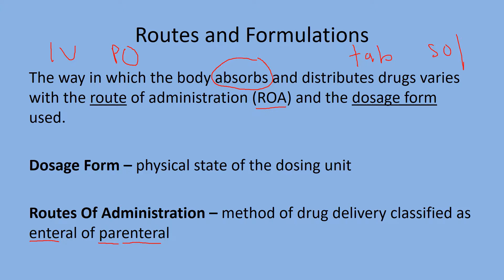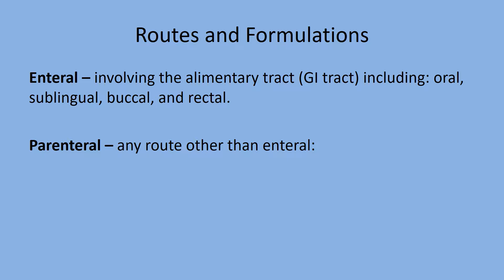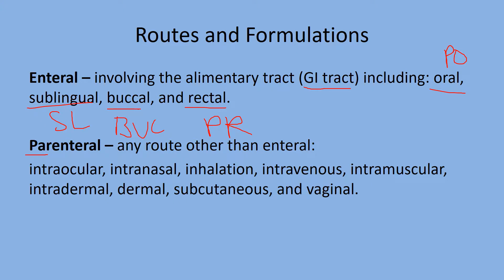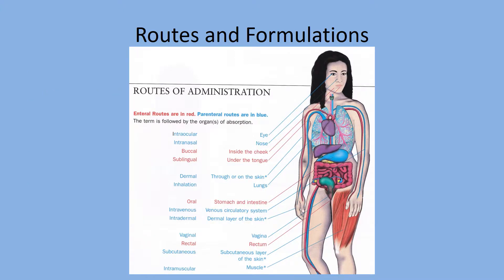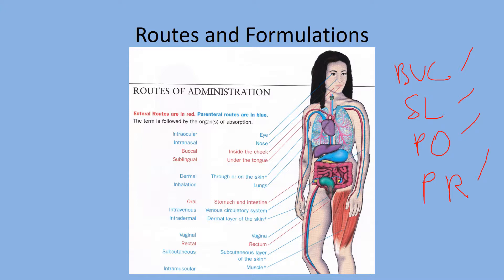Just remember the enteral routes, and everything else will be parenteral. The four enteral routes you need to recall are: oral (PO), sublingually or under the tongue (SL), buccal or between the cheek and gums, and rectally. Those four are absorbed through the GI tract. Everything else is parenteral — into the eyes, nose, lungs, a vein, muscle, the skin, under the skin, or vaginally. In this image, the enteral routes are outlined in red: buccal, SL, PO, and PR.